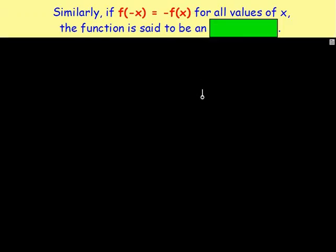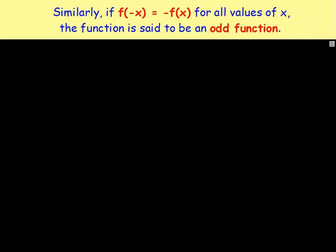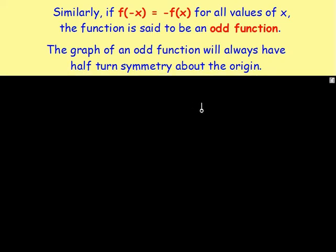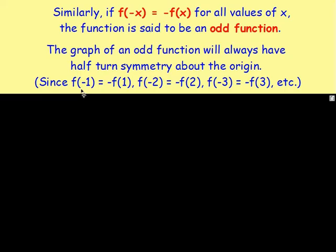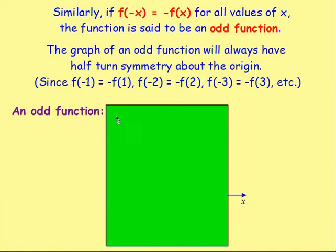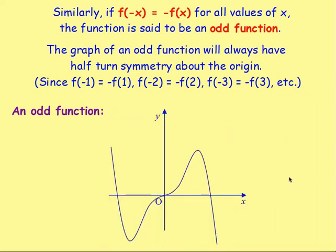Similarly, if you have f of negative x and that works out to be the negative of whatever f of x was, then that function would be an odd function. If you have an odd function, the graph is no longer symmetrical about the y-axis, but what you would have is half-turn symmetry about the origin. For example, an odd function may look something like this — you can see that it's got half-turn symmetry about the origin. f of negative 1 would be the negative of whatever f of 1 would be, and f of negative 2 would be the negative of whatever f of 2 would be.